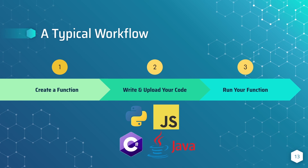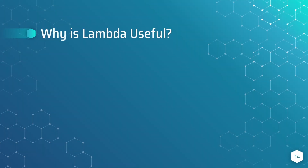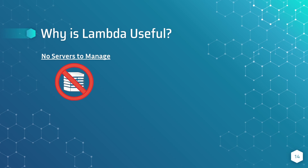Why is Lambda useful? Why are so many companies deciding to use Lambda over something traditional like EC2? It comes down to several points. First, there are no servers to manage — you don't need hardware-focused individuals worrying about physical infrastructure, maintaining it, swapping parts, or managing data center temperatures. As a developer, you don't have to worry about patching or security — you leverage AWS's existing security mechanisms to ensure your Lambda function is locked down. No servers to manage is a huge bonus.